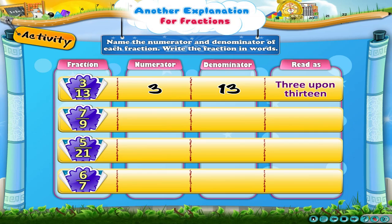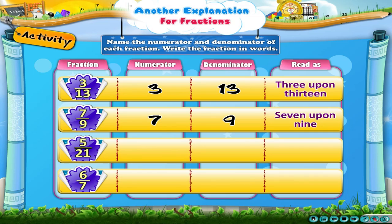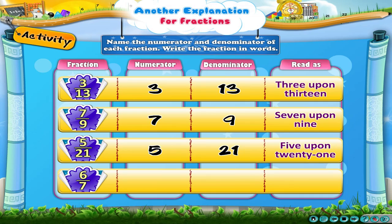Answer the second one: here the numerator is 7, the denominator is 9, and the fraction is read as 7 upon 9. Answer the third one: here the numerator is 5, the denominator is 21, and the fraction is read as 5 upon 21.